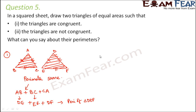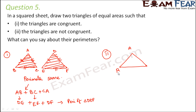So this is the first case. Now let us look at the second case where we have two triangles which have equal area but they are not congruent. We need to draw two triangles of two different shapes or two different sizes but with the same area. It is very simple to draw such triangles. Let us draw the first triangle as triangle ABC.